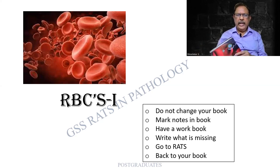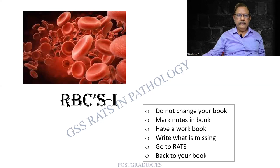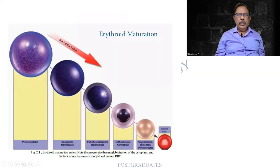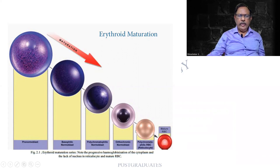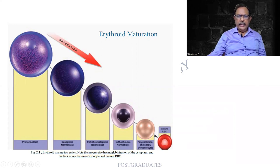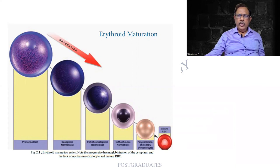With this small introduction, I shall be starting the classes. Now, see the picture — it should take you to your book. This is the maturation of the erythrocytic series. You have a pro-erythroblast, then the basophilic, then the polychromatic, orthochromatic erythroblast, then the reticulocyte, and finally the RBC. This is for the sake of concept and will not be required for any answers.